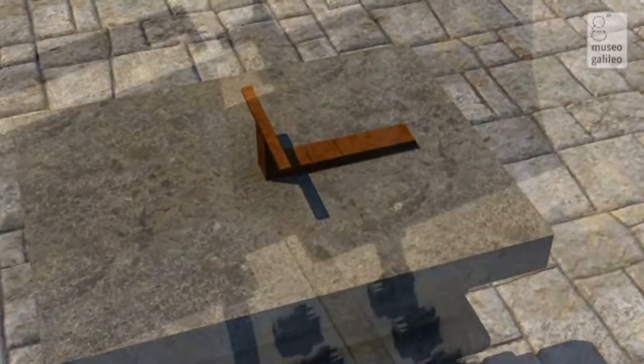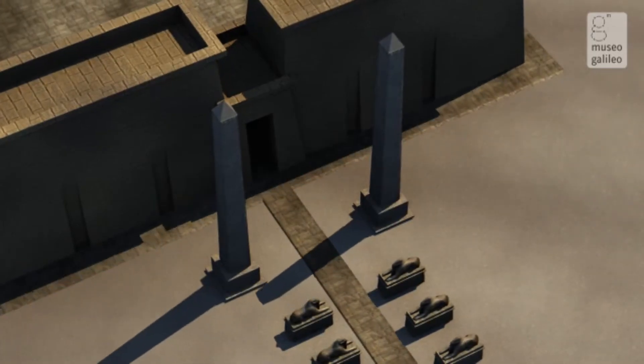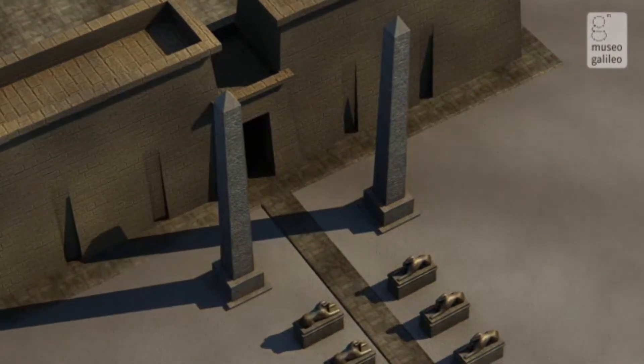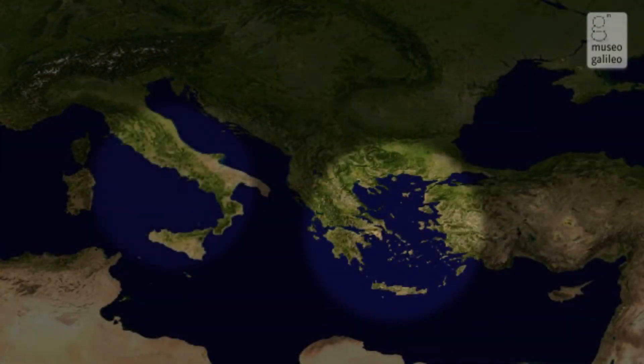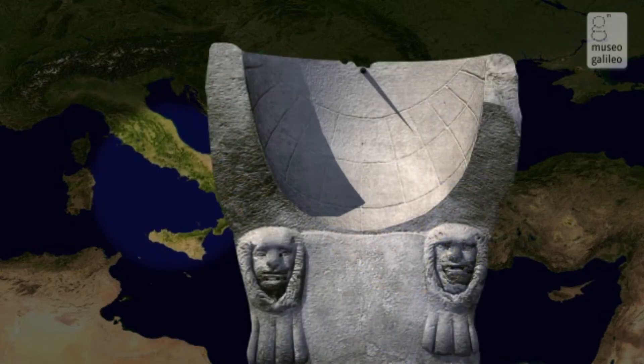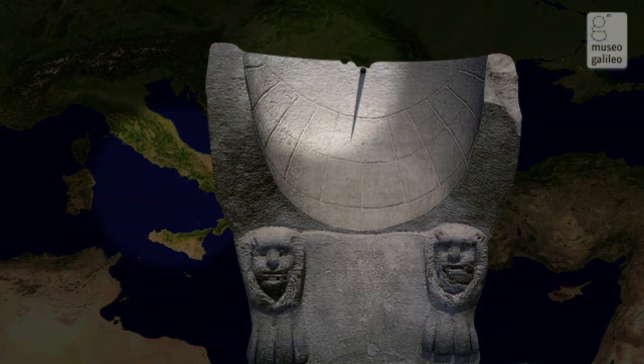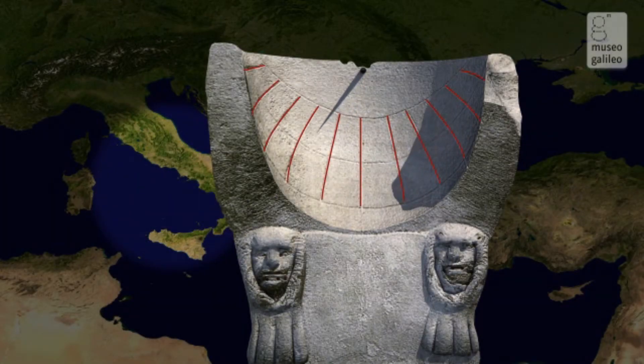The first monumental sundials consisted of large obelisks. From the direction and length of a shadow cast on the ground, one could determine the time of day. Ancient Greece and the Roman Empire saw the development of ordinary sundials, which also functioned on the principle of a cast shadow. The time of day is indicated by the shadow of the style, or gnomon, that touches the hour lines drawn inside a spherical surface, or on a horizontal or vertical plate.